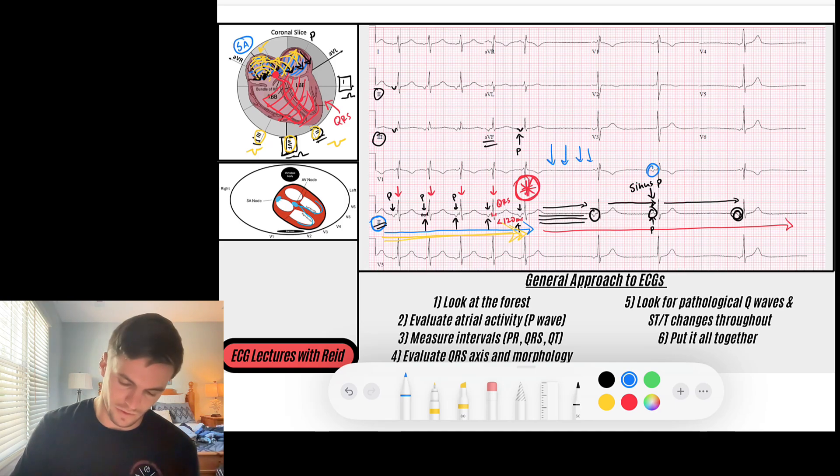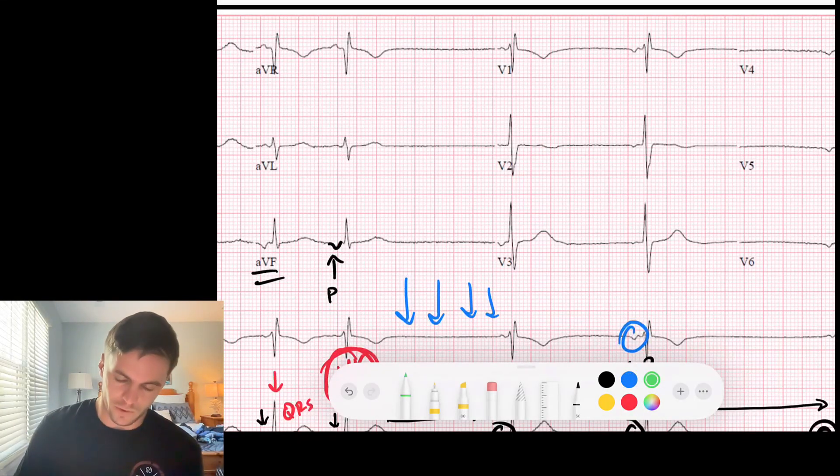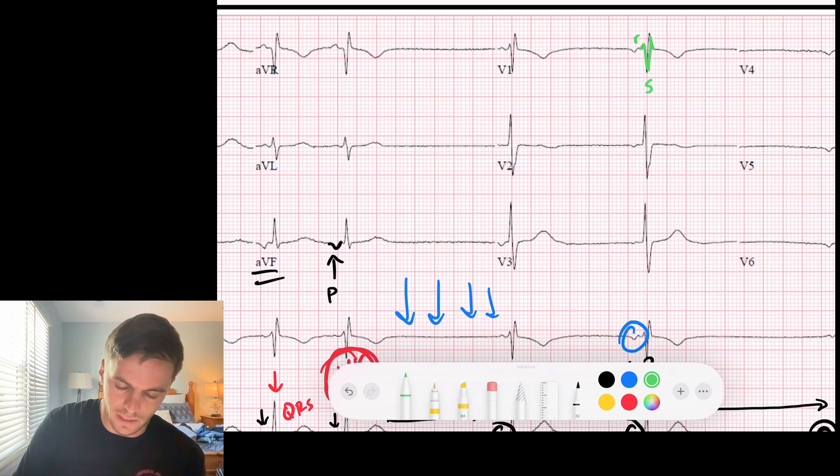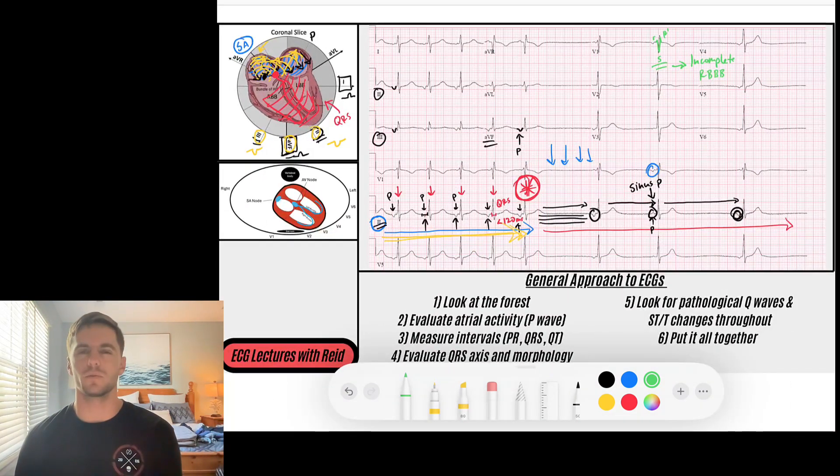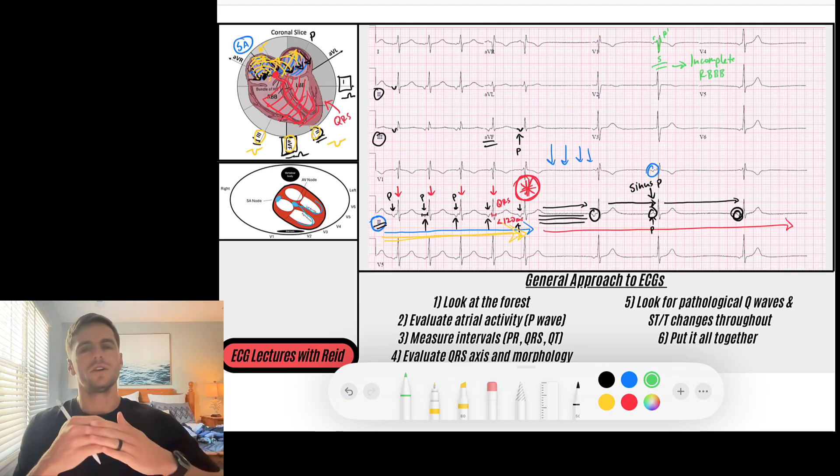So then we see we get conduction through the QRS complex. So we have to take a look at the morphology of the QRS complex. You see we've got a little bit here—this is outside the realm of this discussion, but you see we have a little RSR prime. We have a little RSR prime lead V1—that's a right bundle branch morphology. However, it's a narrow complex QRS, so that's actually going to be an incomplete right bundle branch block in the setting of an ectopic atrial rhythm.